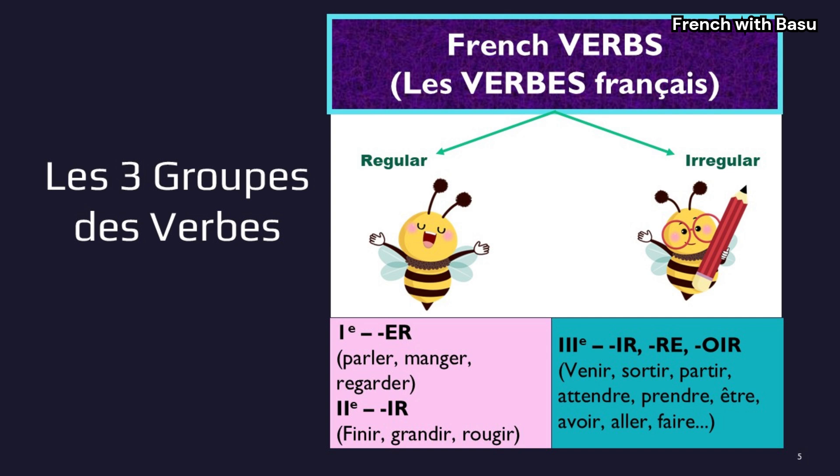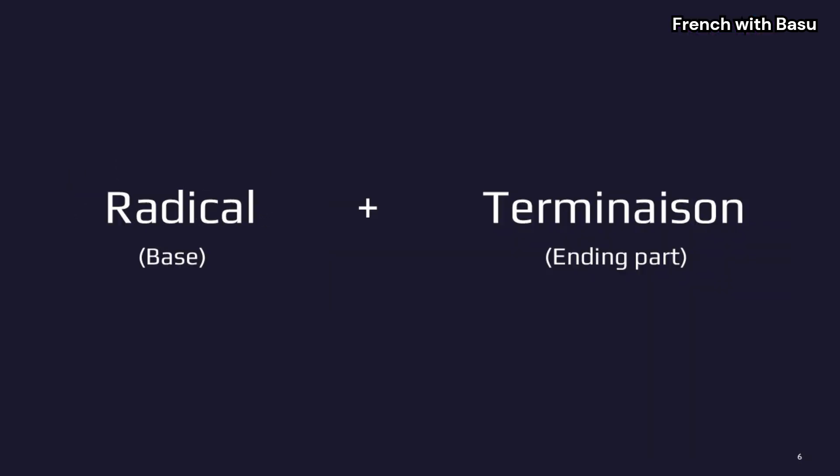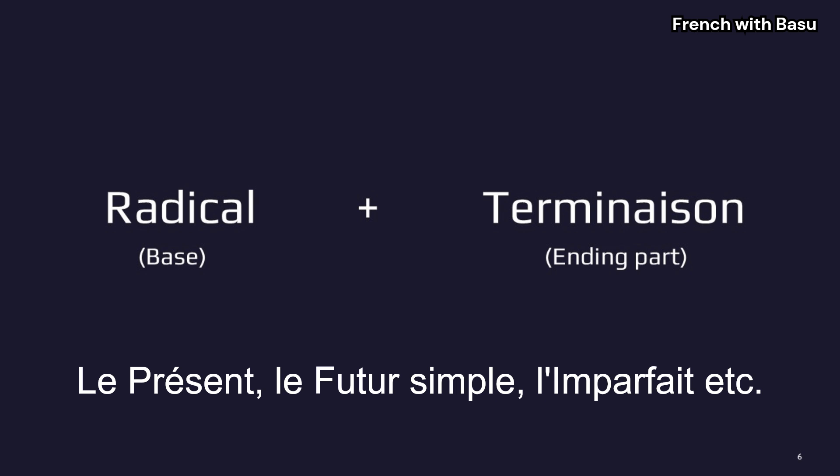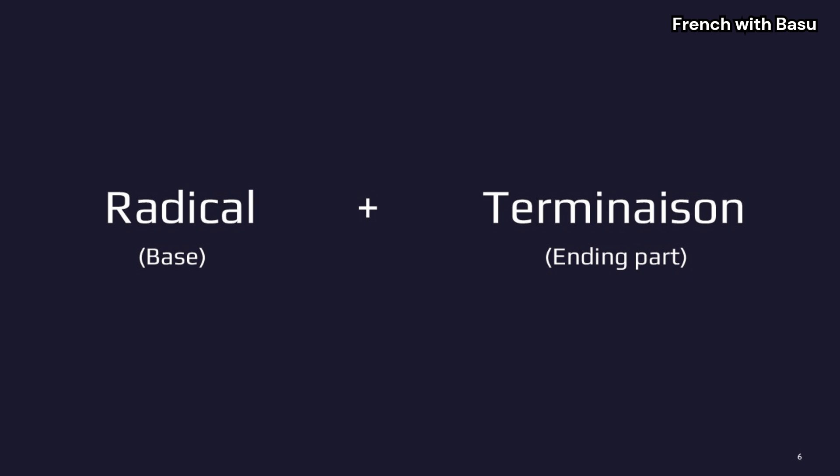There are three groups of verbs in French. The first group of verbs ends with -er, the second group ends with -ir, and the third group ends with -ir, -re, and -oir. There are many tenses in French which have a radical plus terminaison structure — for example, le présent, le futur simple, l'imparfait, etc. Le conditionnel présent also has a radical plus terminaison structure.